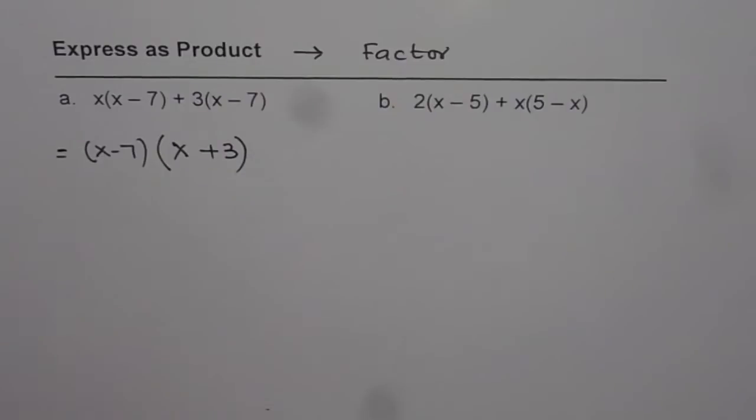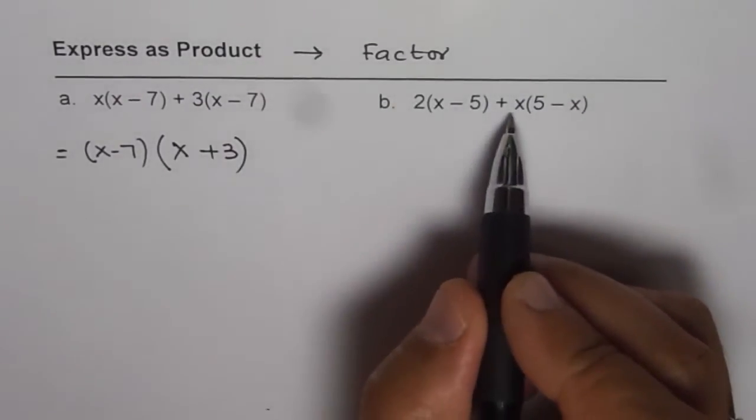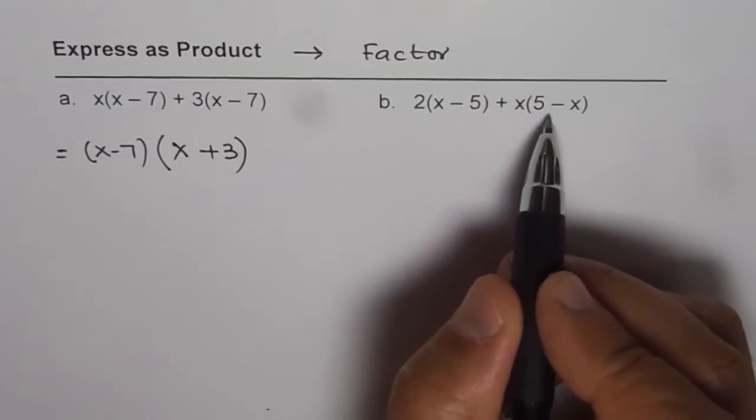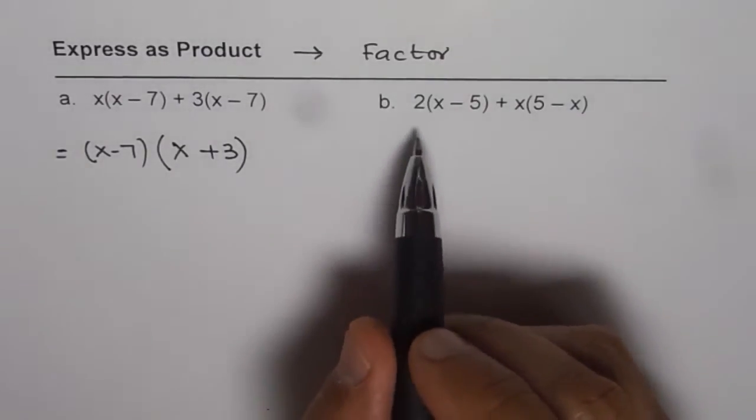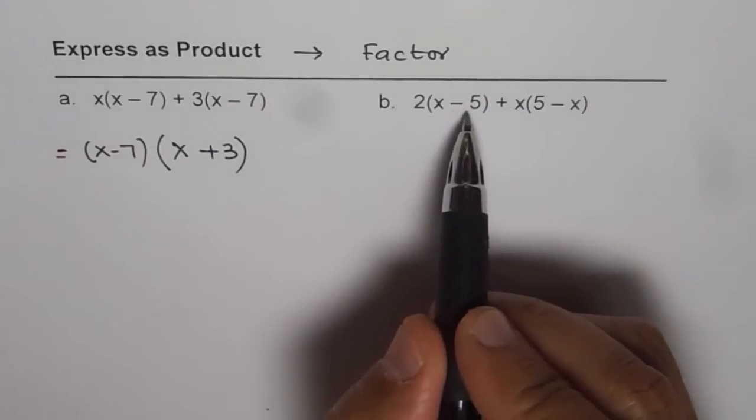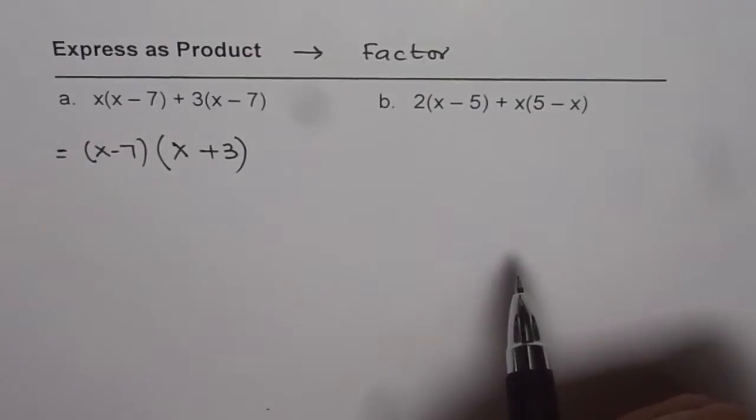Now let's look into part B. It is 2 times x minus 5 plus x times 5 minus x. When we look at it, we find that the two factors are 2 and x minus 5 for the first term and x and 5 minus x for the second term.